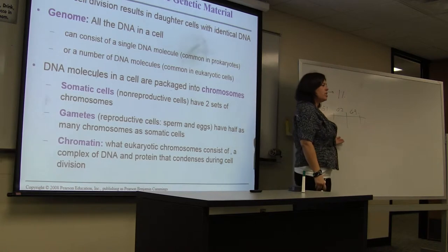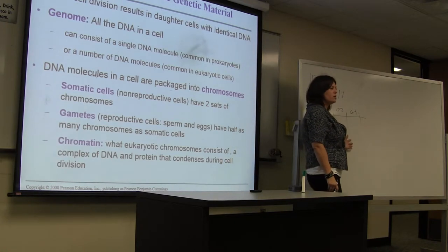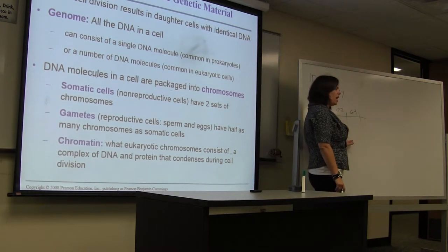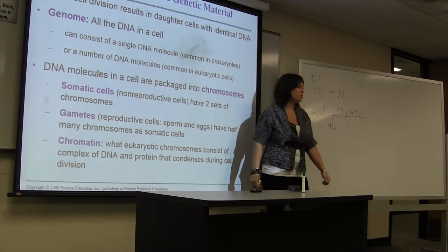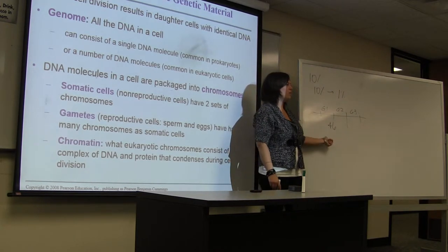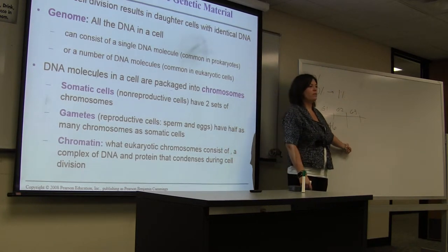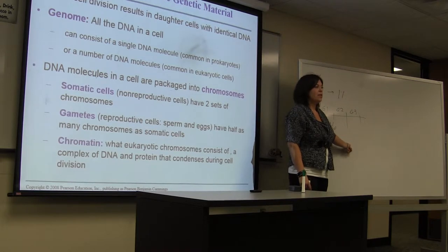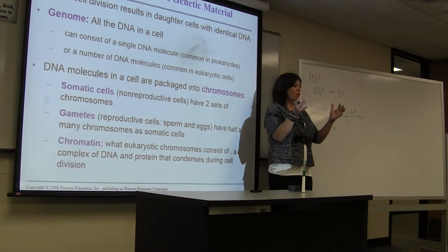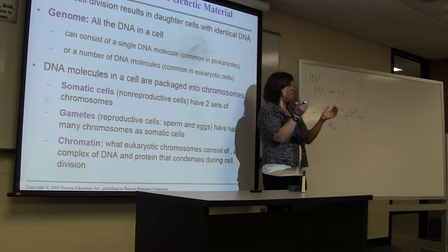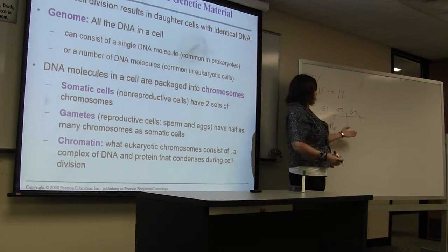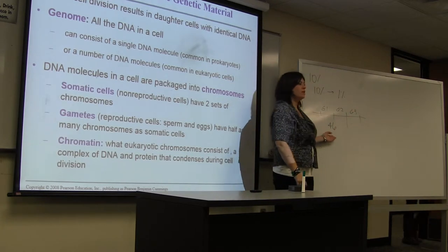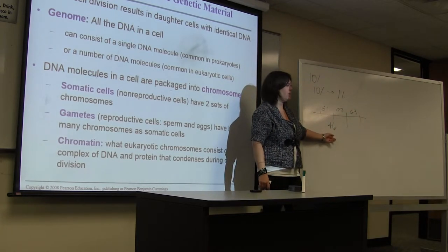Humans have 46 chromosomes — 23 from mom and 23 from dad. That's why during development we are a mix between both parents, because we're getting a little bit of each of their DNA.